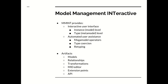Mint also provides users with automated assistance for using things like mega model operators, type coercion, retyping and others. The main artifacts that a user would interact with in Mint are things like models, relationships between them, transformations, an editor for what we call a model interconnection diagram — which is the graphical representation of a mega model — as well as Eclipse's extension points and the Mint API.